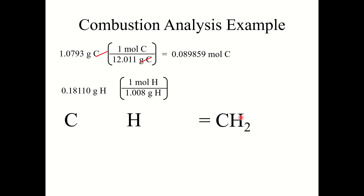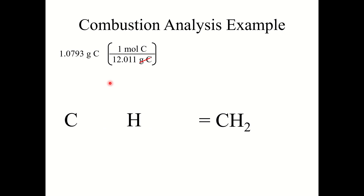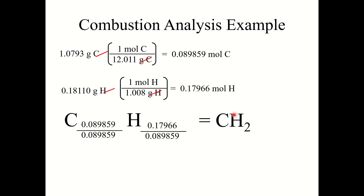To recap combustion analysis: convert grams CO₂ and grams H₂O to grams C and grams H. Sum these masses and compare to the original sample mass — if equal, no oxygen is present; if there is a difference, that mass is the oxygen in the hydrocarbon. Convert all masses to moles and determine the empirical formula. The final answer for polyethylene is CH₂.